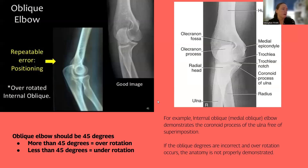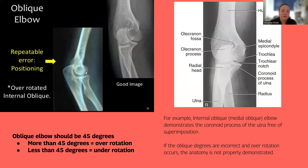Here's an example of that internal oblique elbow. When well positioned, we should see the coronoid process of the ulna free of superimposition. If you are not obliqued enough, it'll be superimposed. But also if you oblique too far, the image starts to look like a lateral elbow — you've gone too far past the 45-degree point. So we need to make sure we're in the correct positioning degree to see the anatomy we need.